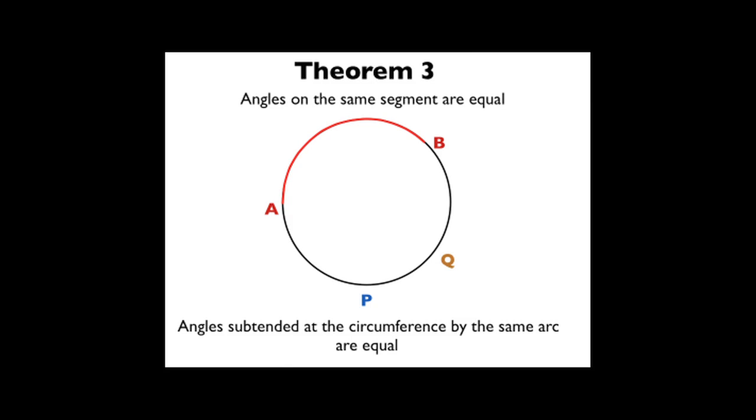The final theorem we're going to discuss tonight is that angles on the same segment are equal. This is what I mentioned earlier and this is what it means. Suppose we have a segment from A to B and we draw an angle to P from that segment, that will be the same as the angle we draw to Q from that segment. So angles subtended at the circumference by the same arc are equal.